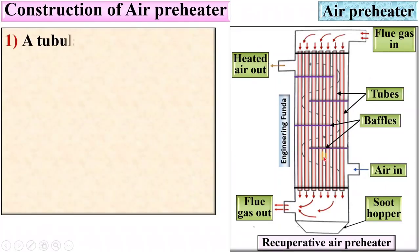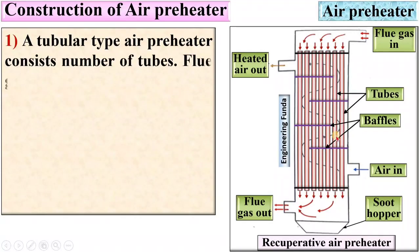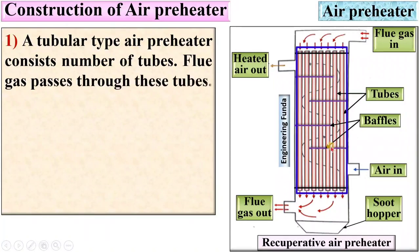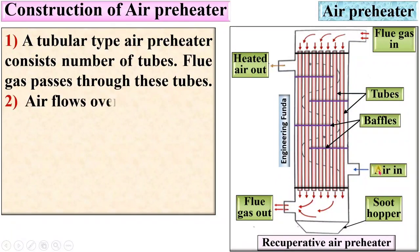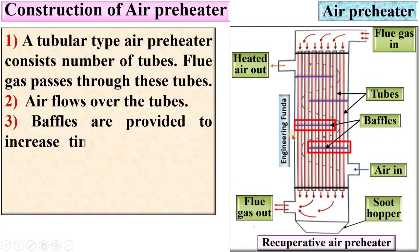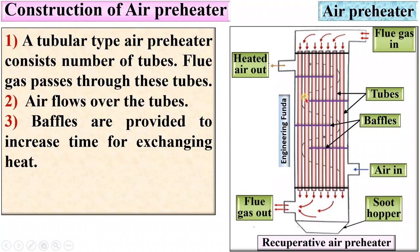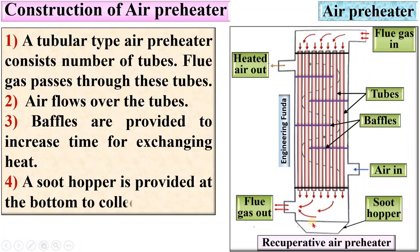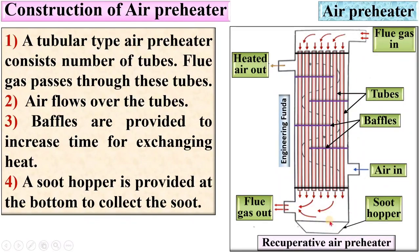Construction of the air preheater: a tubular type air preheater consists of tubes. Flue gases pass through these tubes, and air flows over the surface of these tubes. Baffles are provided to increase the time for exchanging heat from the flue gases to the air. A soot hopper is provided at the bottom of the air preheater to collect the soot or dust.